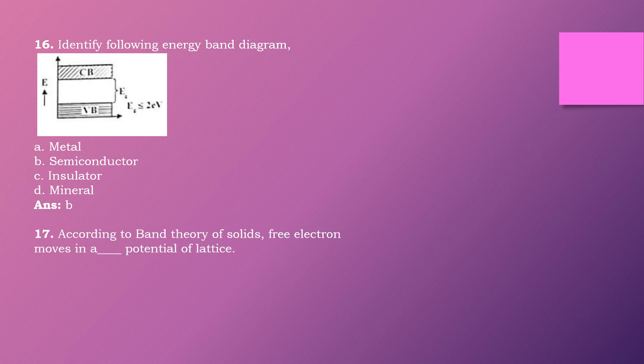Question seventeen: According to the band theory of solids, a free electron moves in a dash potential of a lattice. Options are: periodic, constant, zero, none. The right answer is option A: periodic. According to band theory of solids, a free electron moves in a periodic potential of a lattice.